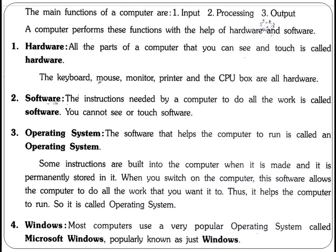Now, the third one is the operating system. The software that helps the computer to run is called an operating system. We have now seen what software is — this operating system is also a software. Software means instructions needed by a computer to do all the work. So the operating system is that computer software which is used to run the computer.